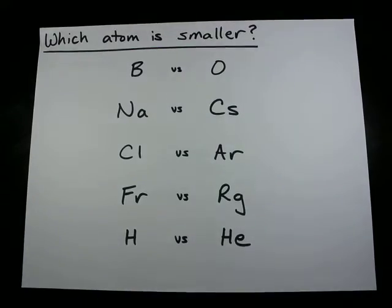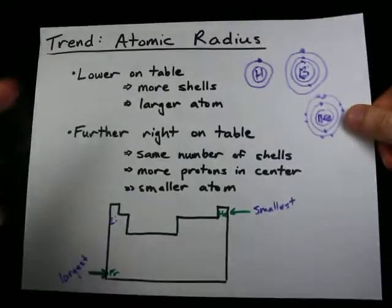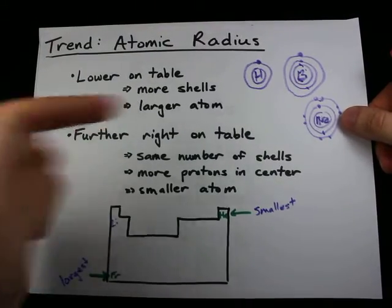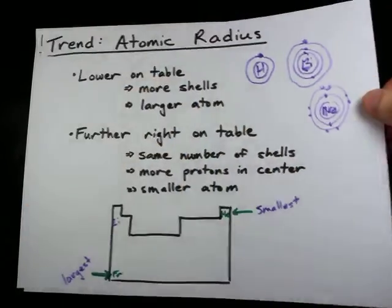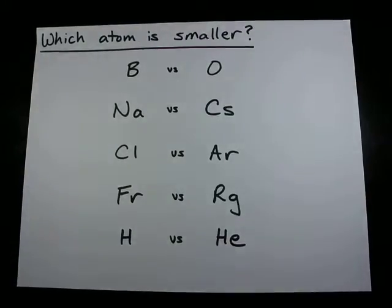Now if you recall what we talked about, the lower an atom is on the periodic table, the larger it will be. But as you move further to the right, the smaller the atoms get within each row.